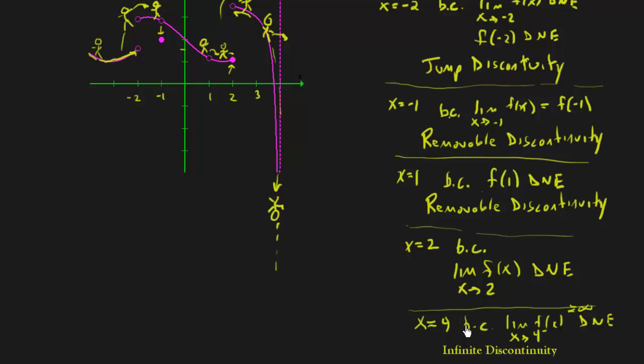So we have really three types of discontinuities. We have what we call the jump discontinuity, where you actually have to jump from one line to the other. We have a removable discontinuity, that's basically where you remove a point from the graph and either put it somewhere else or just remove it completely.